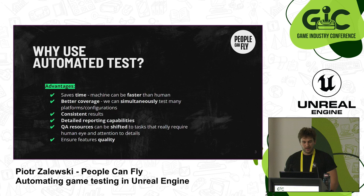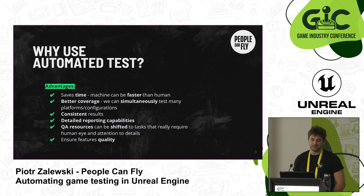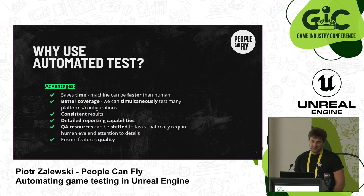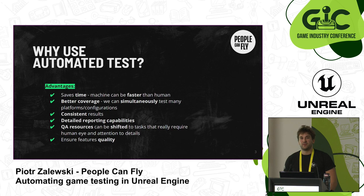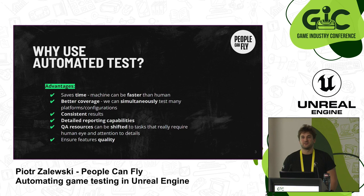If you create your reports, like the flow of creating the reports, you will have detailed reports in your mail probably. Another advantage is that your QA resources can be shifted to tasks that really require a human eye and attention to detail. So while the basic tests are being run by the machine, your QA can do the stuff that machines cannot do. If developers create tests for the features, it will ensure the feature's quality, because if anything is broken, you will see it quite immediately.